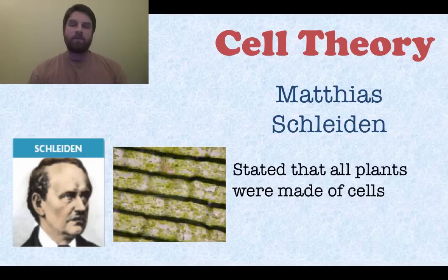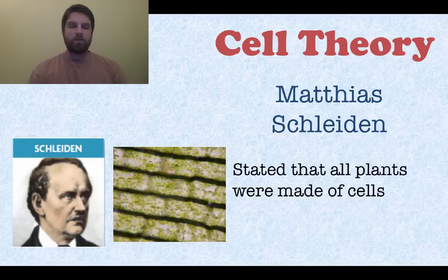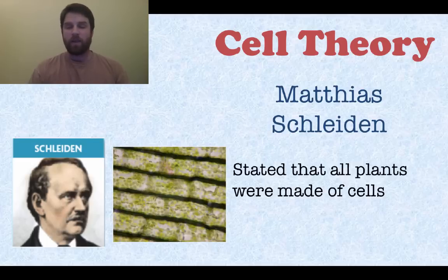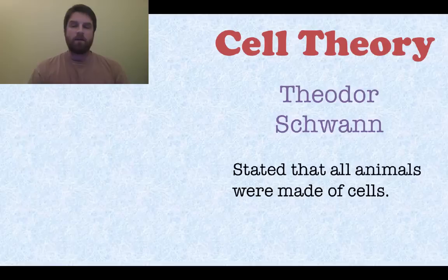Next we have Matthias Schleiden. He was the one that stated that all plants are made of cells. He looked at a slide much like the one you see on the bottom left — you see a little bit of green in there. We'll go over why plants appear green; it's because of their chloroplasts. So he was the one that looked at plants and actually said that they were made of cells.